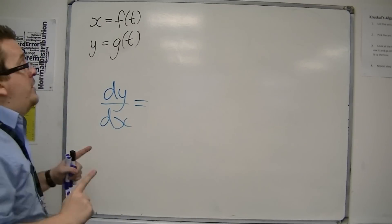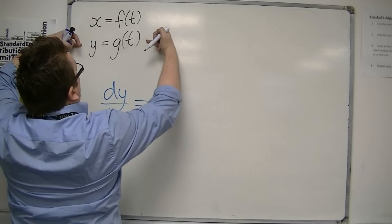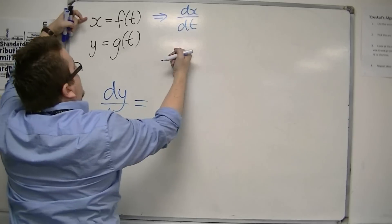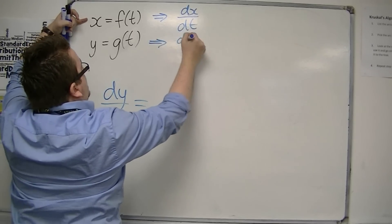By first differentiating the x and the y with respect to t, so I find dx by dt, and I find dy by dt.